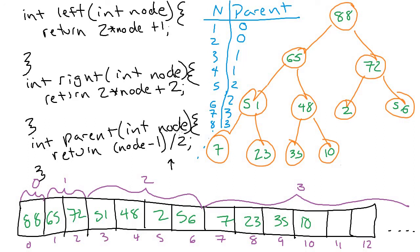We're going to pick this up in the next video and start implementing the heap as a class that keeps track of all the nodes in an array. These methods are what we'll use to jump around from node to node and traverse our tree, instead of following node links like we did with the binary search tree. We'll also turn to putting in the insert and dequeue methods. Thanks!